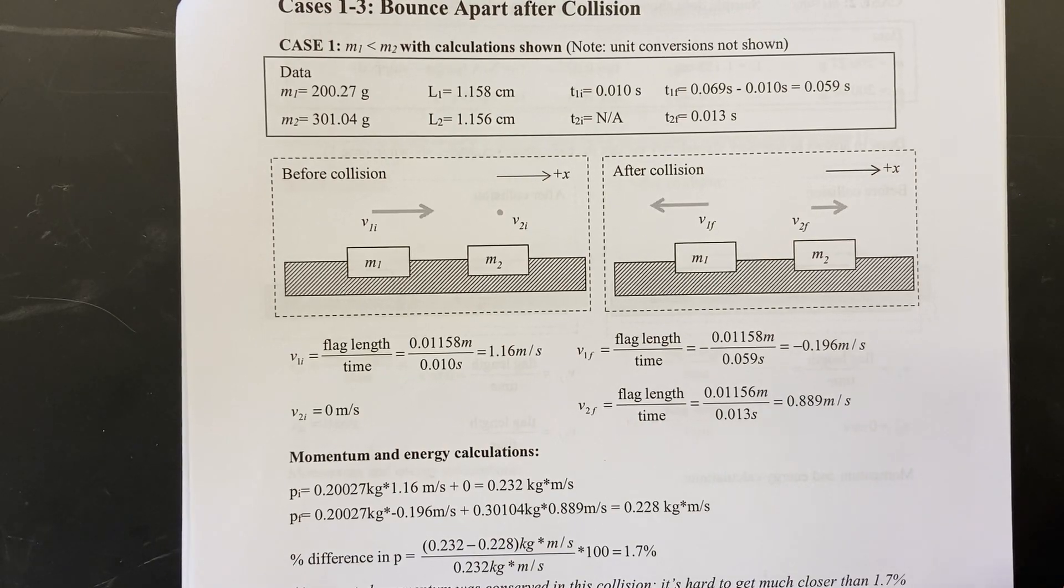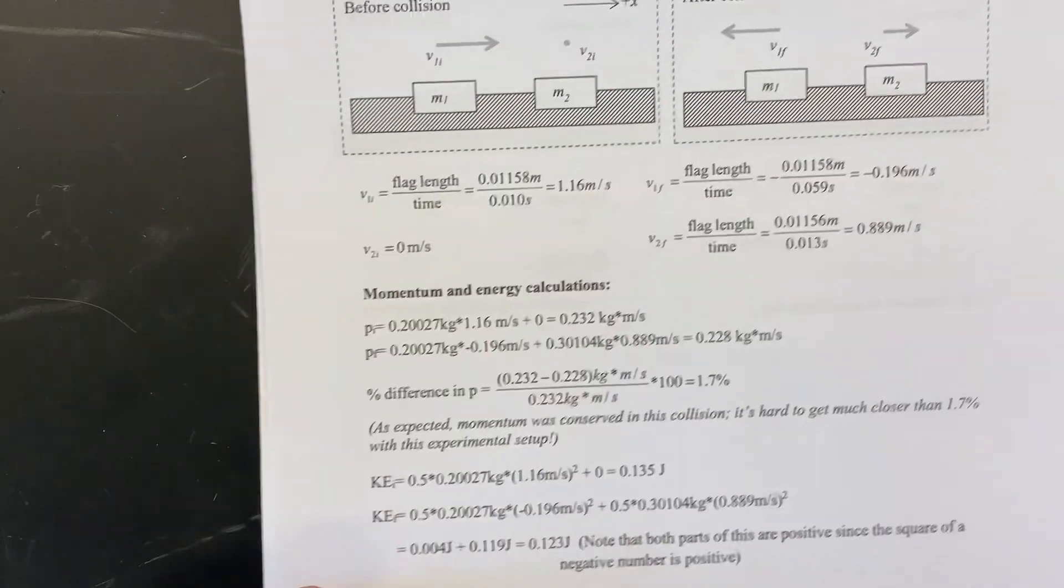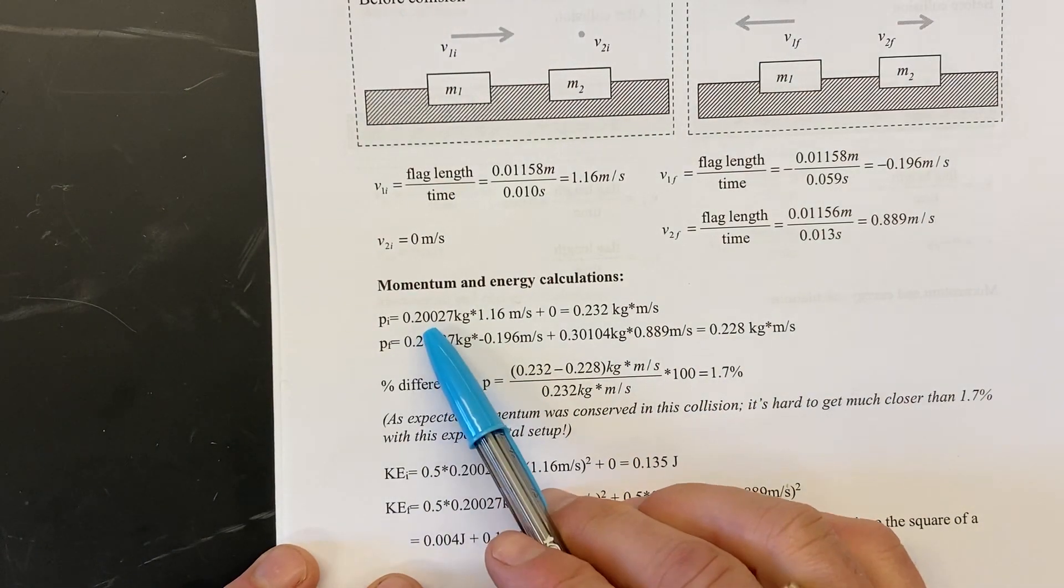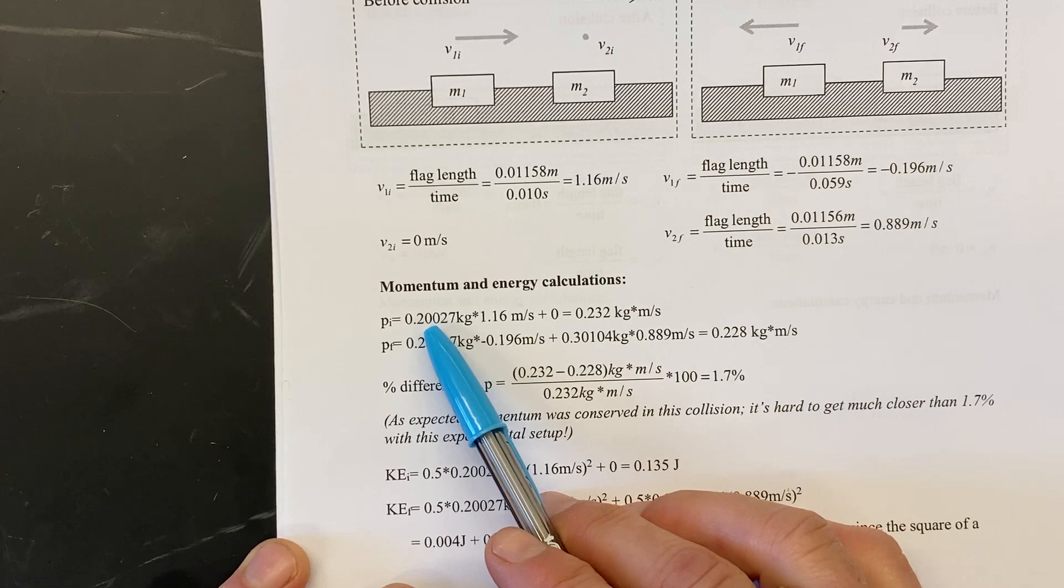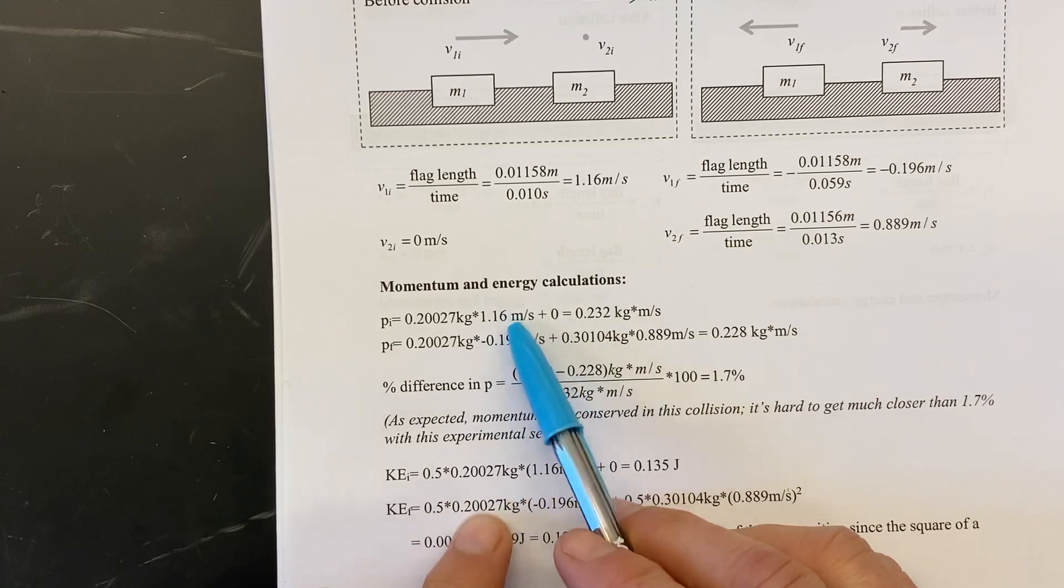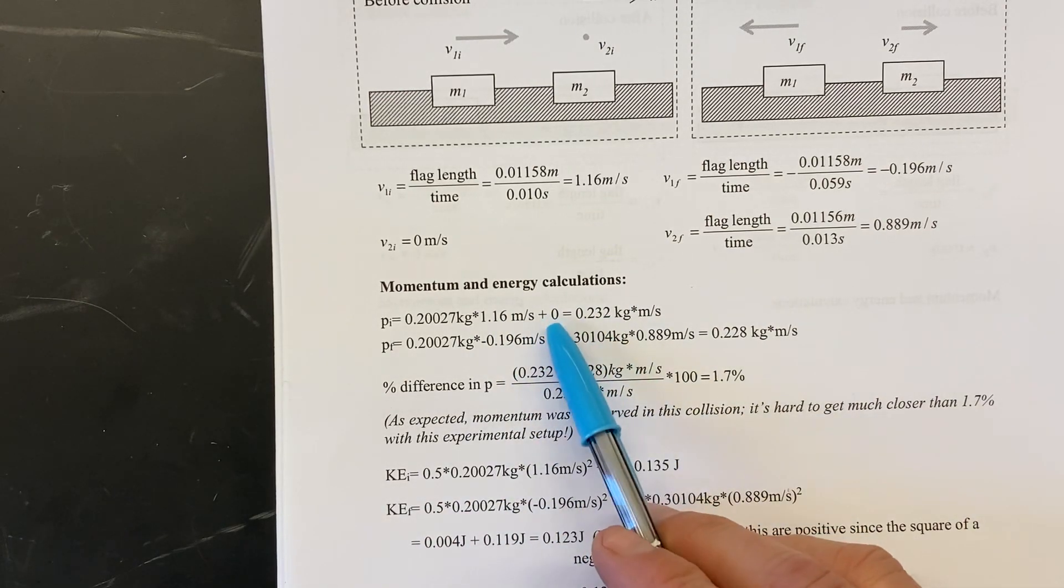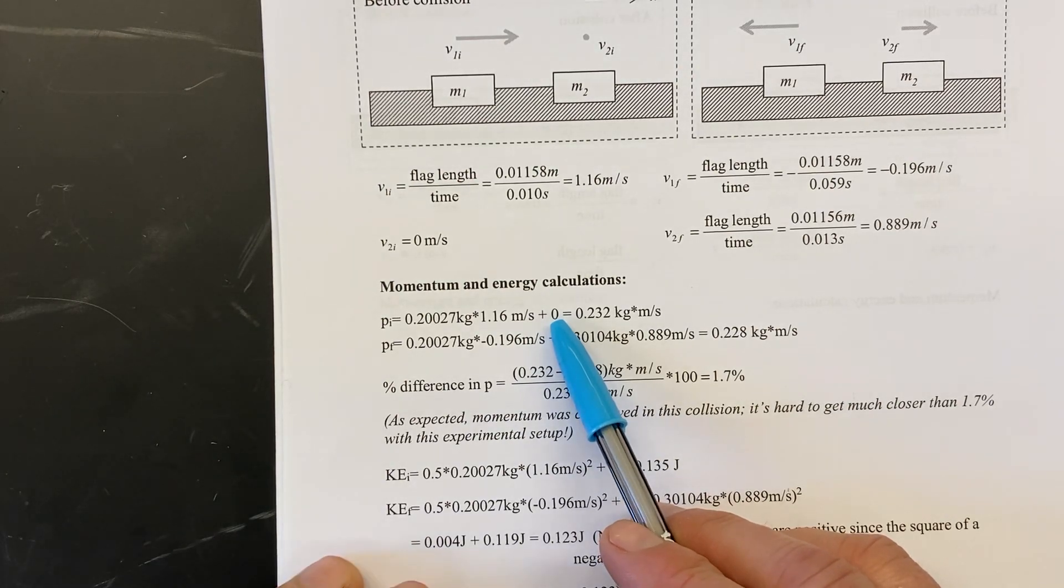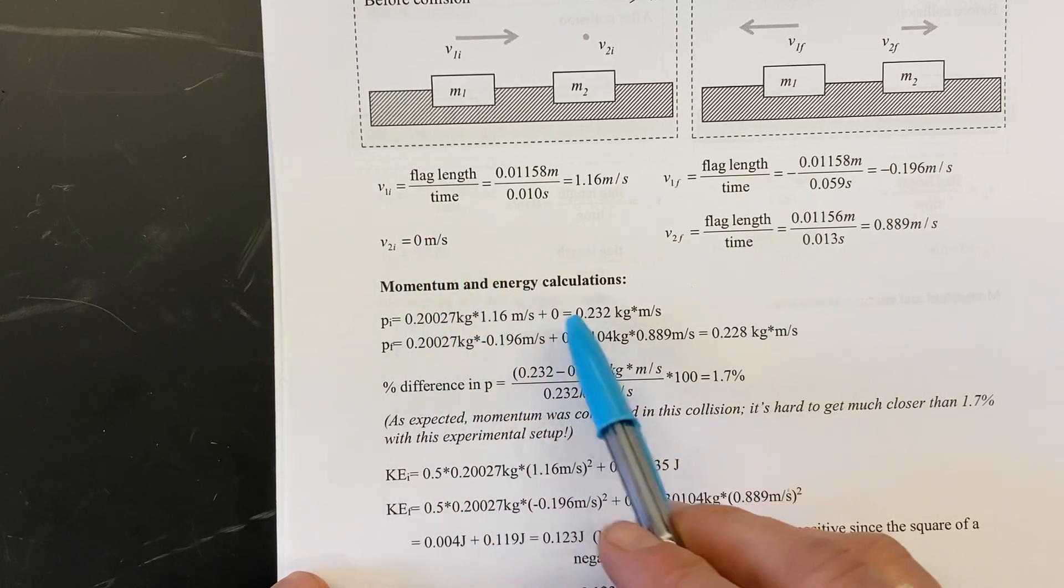All of our calculations are going to be done in SI in meters per second. So we take our mass that was given in grams up above but we've converted to kilograms and then we use the velocities that we just calculated to see what the momentum is. Okay, this zero here, that's the momentum of cart two or glider two initially and it's zero because it was not moving initially.